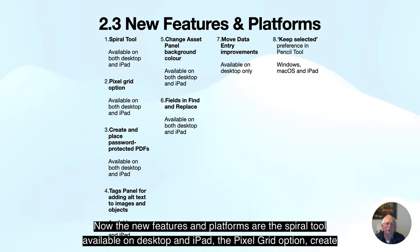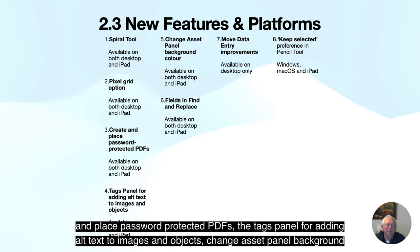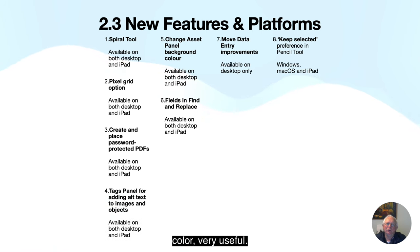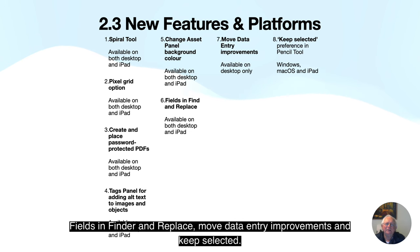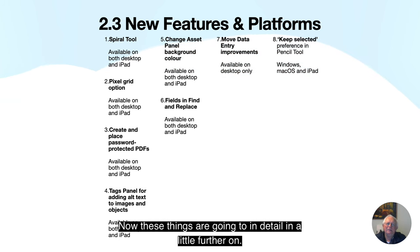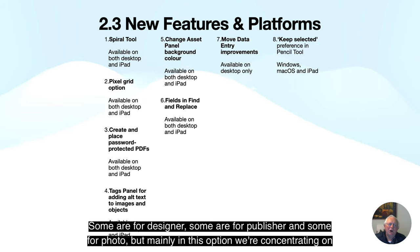Now the new features and platforms include the Spiral tool, available on desktop and iPad; the pixel grid option; create and place password protected PDFs; the tags panel for adding alt text to images and objects; change asset panel background color; fields in find and replace; move data entry improvements; and keep selected. Some are for Designer, some for Publisher, and some for Photo, but mainly we're concentrating on Designer.